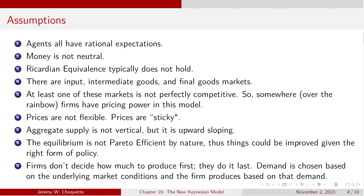That's something required to have assumption six: prices are not flexible — prices are sticky, a little bit slow to adjust. So if there is some kind of a shock, prices can't respond immediately, or at least not all prices can. Some can, some can't. Because of that, aggregate supply is not vertical but is still upward sloping. Therefore the equilibrium is not Pareto efficient. Thus things could be improved given the right form of policy. Finally, firms don't decide how much to produce first — demand is chosen based on the underlying market conditions, and then the firm produces based on that demand. Output is more demand-determined than entirely supply-determined.